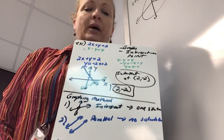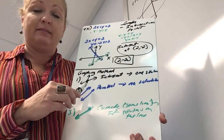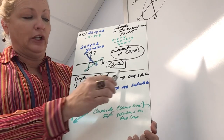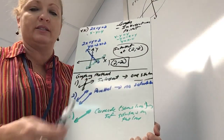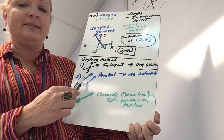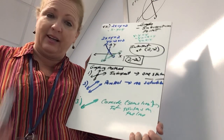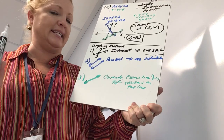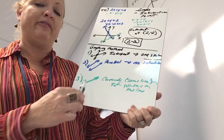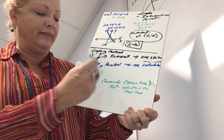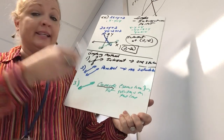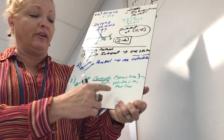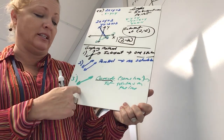When graphing two lines, three things can happen. They could intersect — giving one solution at the point of intersection. They could be parallel — no points in common, so no solution. Or they could coincide — one line lies on top of the other, meaning they are the same line and share every point, giving infinite solutions.